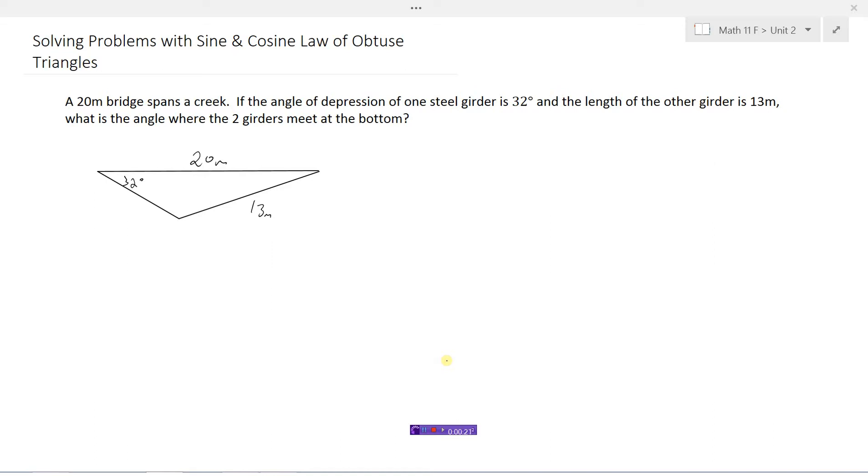So here's our bridge 20 meters long. The angle of depression, that's the angle from the horizontal down, is 32 degrees on one of the girders and we know that the other length is 13 meters. This looks like a sine law question because we have opposite pairs and we're trying to find an angle.